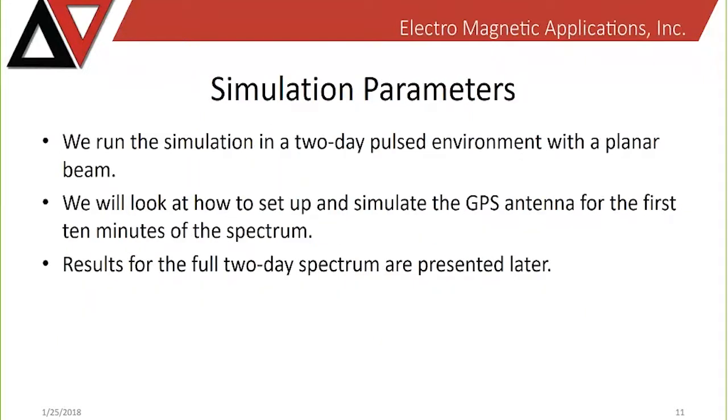So, in the simulation I'll walk through next, we will look at a two-day constant pulse spectrum with a planar beam. Multiple beam types can be employed to control the positioning from which electrons enter the problem space. In this instance, it has determined that a single planar beam from above the antenna would best approximate the type of flux that it may be expected to see. First, I'll show how to set up and simulate the GPS antenna within EMA 3D internal.